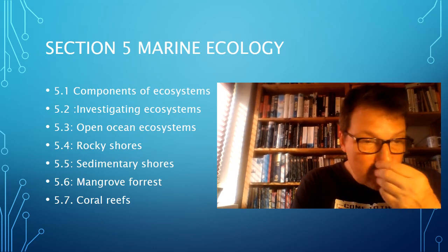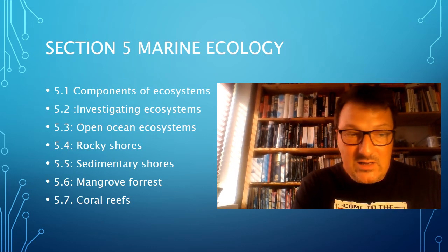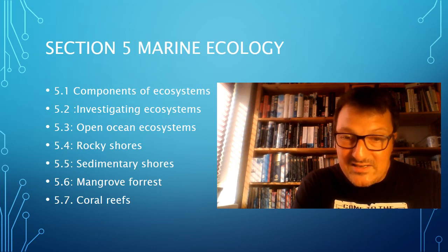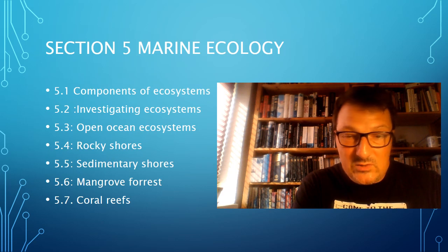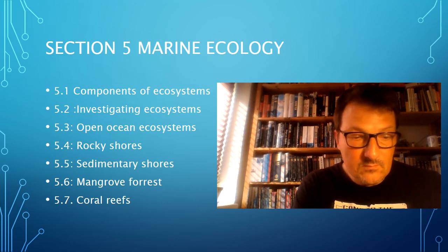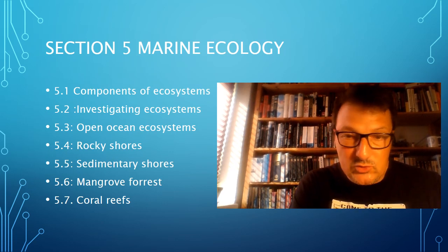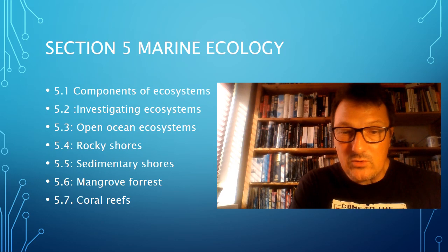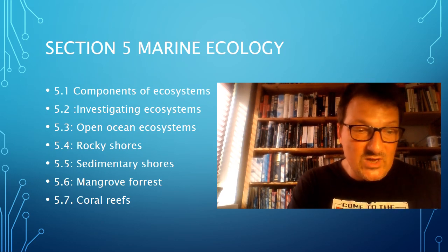5.2 we're going to look at investigating different ecosystems and population sizes of species — so a lot of classical biology there as well. 5.3 is going to look at the open ocean ecosystem — the deep ocean and the open ocean — looking at the effect of sunlight going into the twilight zone and into the deep zones. There's a lot there we're going to go into in a lot more detail when I cover that specific chapter.